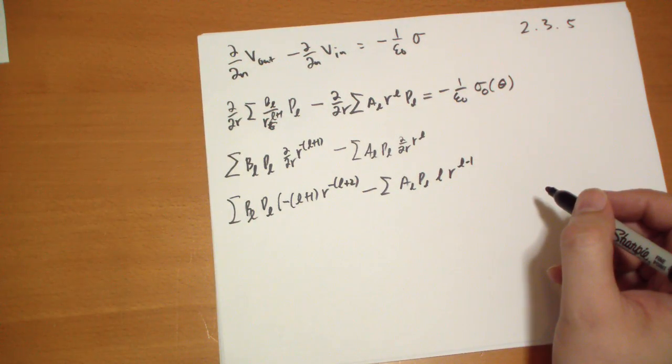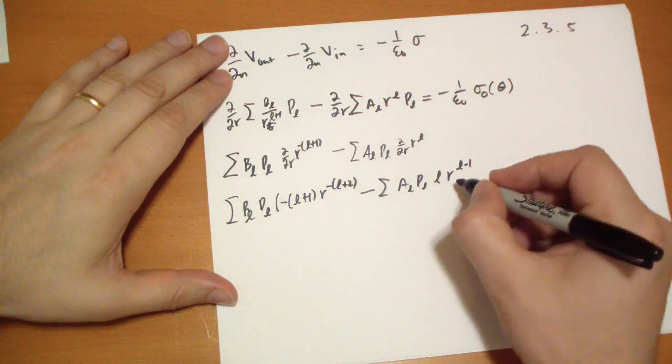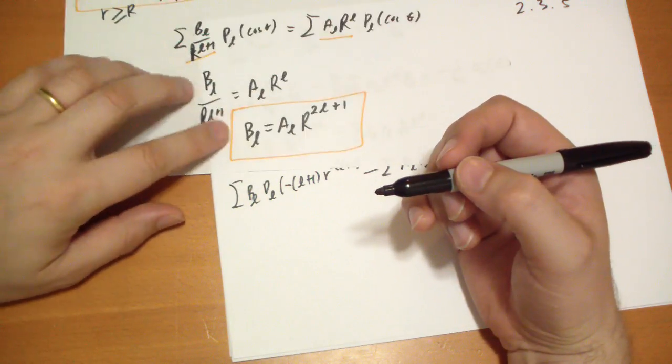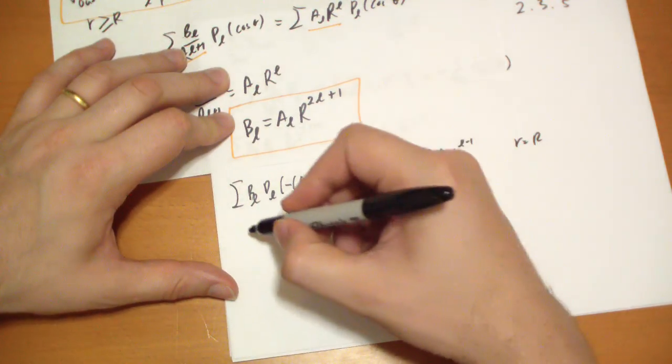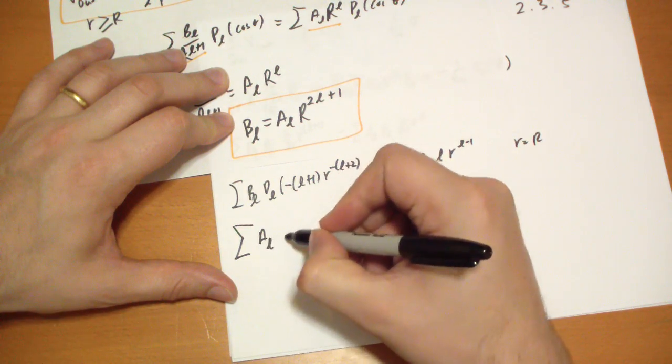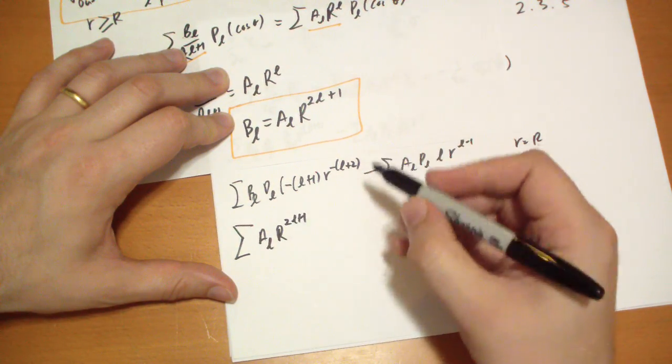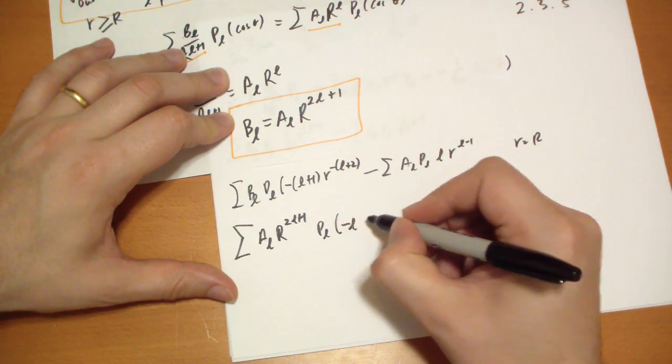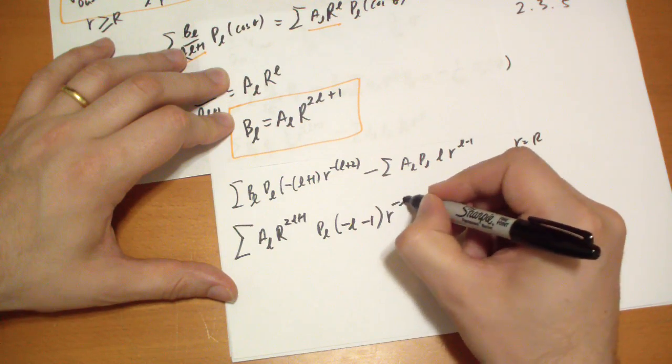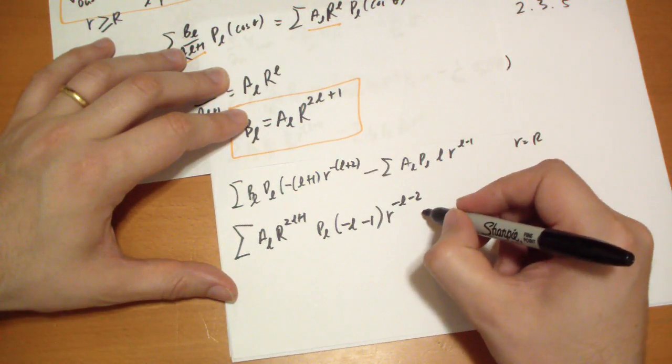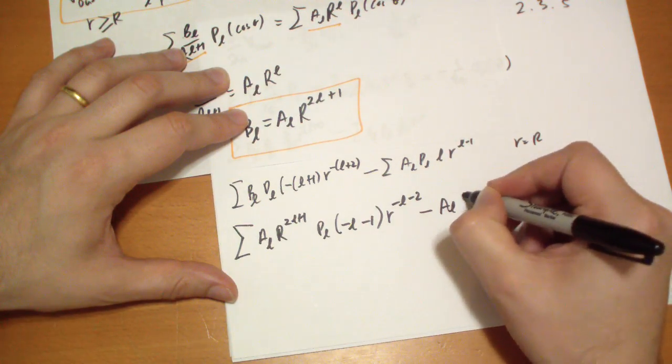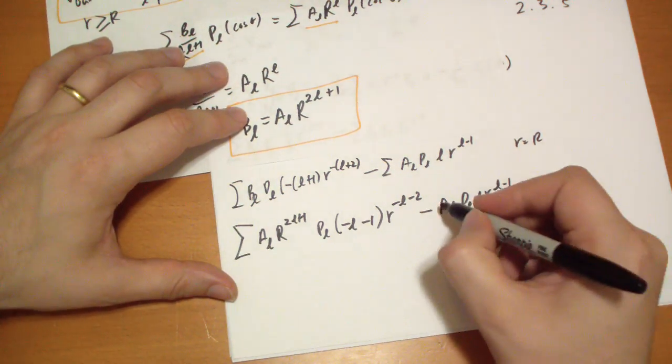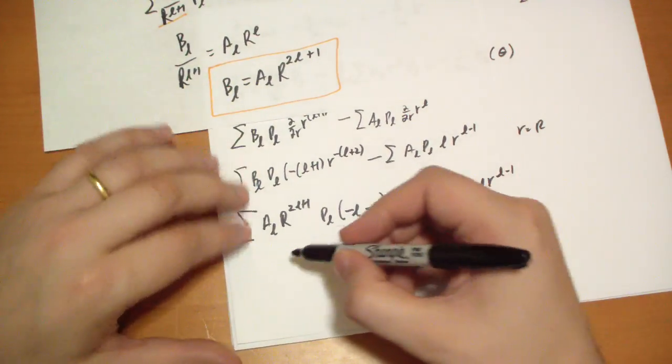We're going to plug in that R is at capital R at this particular point. And we're going to replace B_L with the thing we just calculated. So we get sum of A_L*R^(2L+1)*P_L. Let's distribute this negative sign. So we get negative L minus one times R^(-L-2). Distributing the minus sign there. Minus A_L*P_L*L*R^(L-1). There's a sum here.